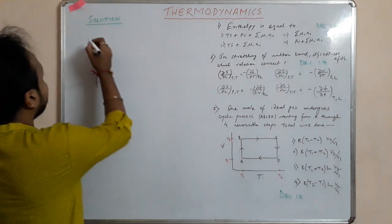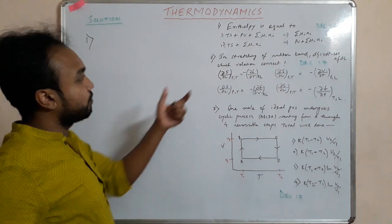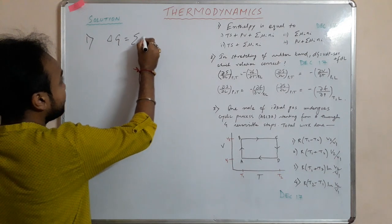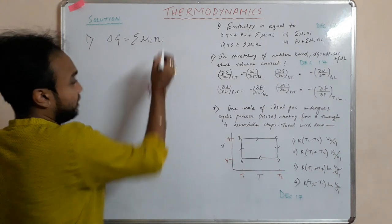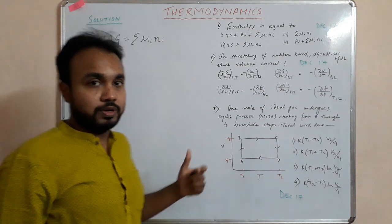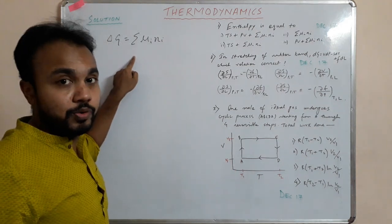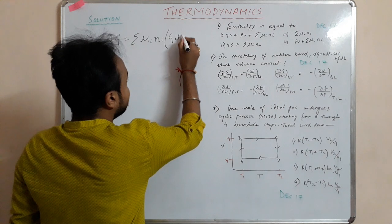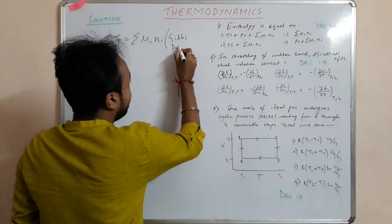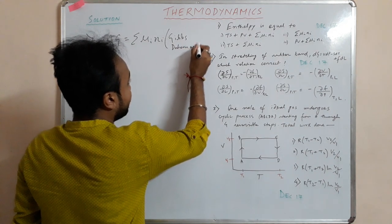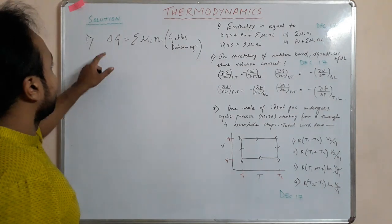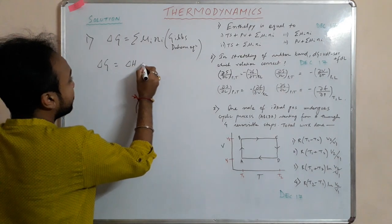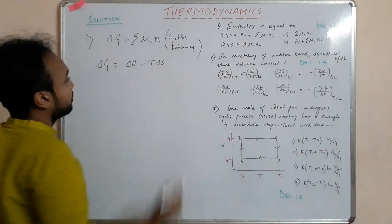We will start from delta G. Delta G is basically Σ μᵢnᵢ — this is the Gibbs-Duhem equation. As you know, delta G = delta H minus T delta S.